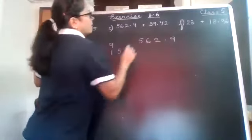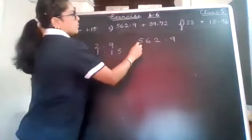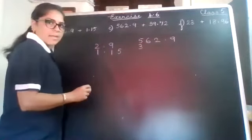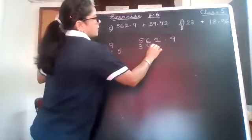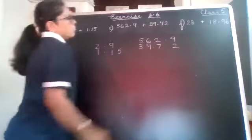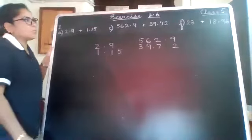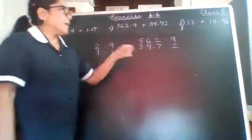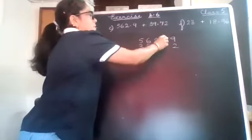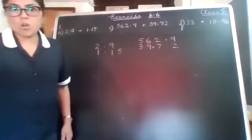562.9 and if I want to write this below this, some of the children, what do they end up writing? 39.72. They write it like this because the second number is 39.72. So some of them write it like this. Then what happens? This point is here and this point is here which is wrong.